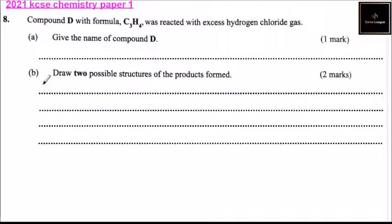Question number eight. Compound D with formula C3H4 was reacted with excess hydrogen chloride gas. Give the name of compound D.